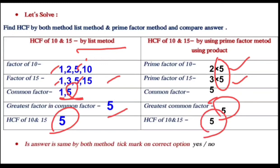So HCF of 10 and 15 is 5 using prime factor method. Using this method we got 5.